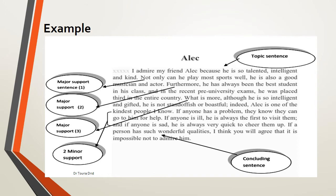The last type of sentence is called the concluding sentence. Usually this comes at the very end. It is a kind of repeating the controlling idea in different words to emphasize it. This is called the concluding sentence.